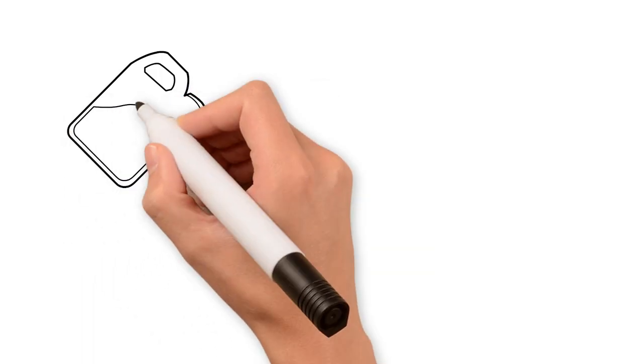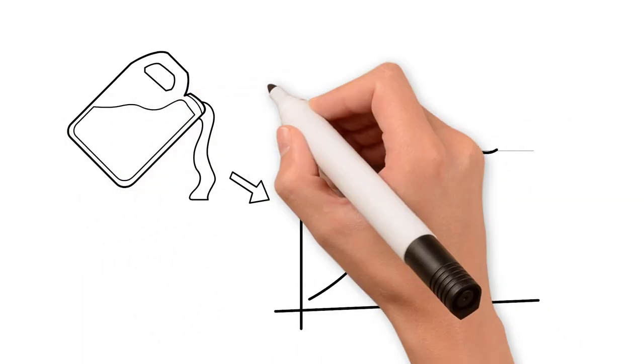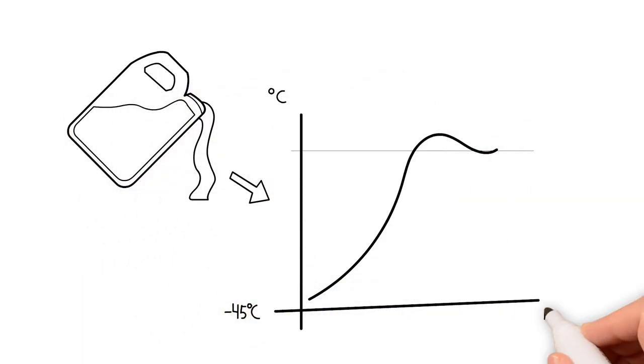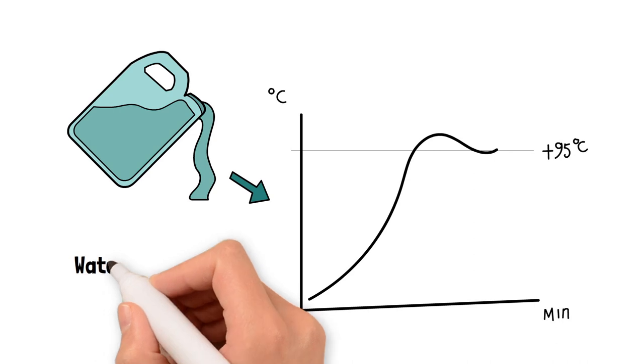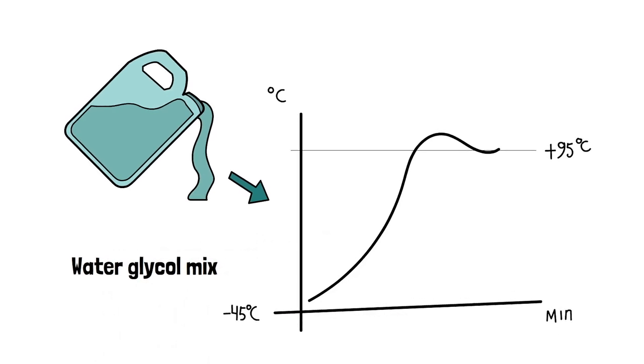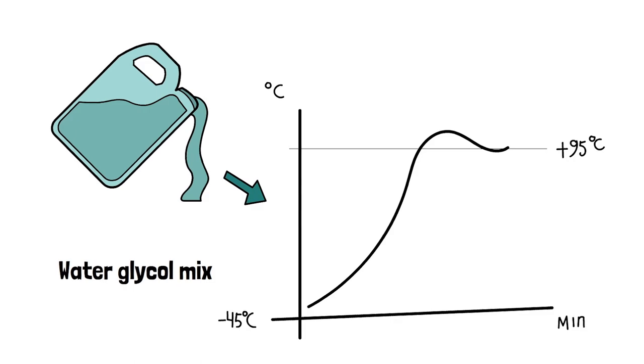Unimotive is also designed for direct operation with water glycol mixtures at temperatures from negative 45 to 95 degrees Celsius and can be individually adjusted if required. Various sensors, expansion pumps and additional pumps are optionally available for this purpose.